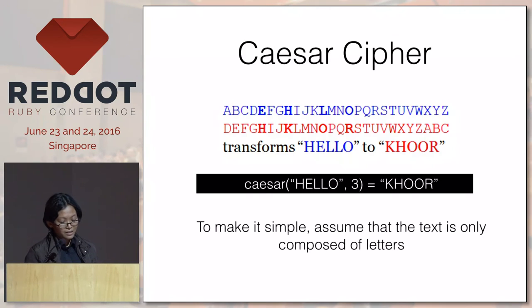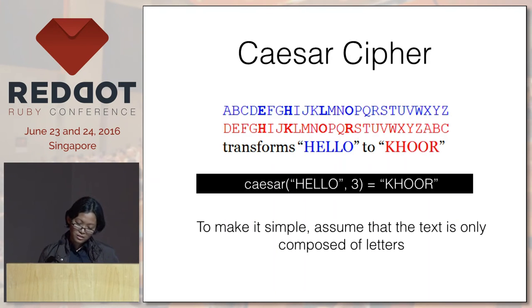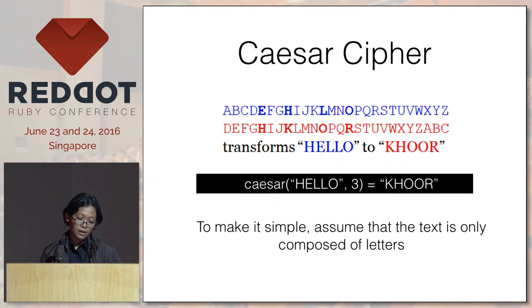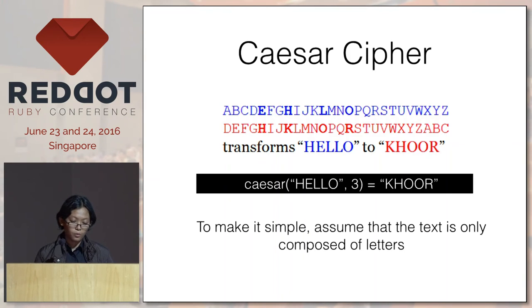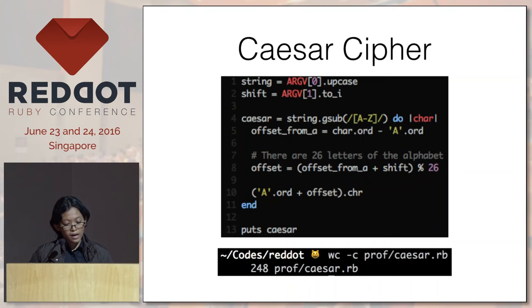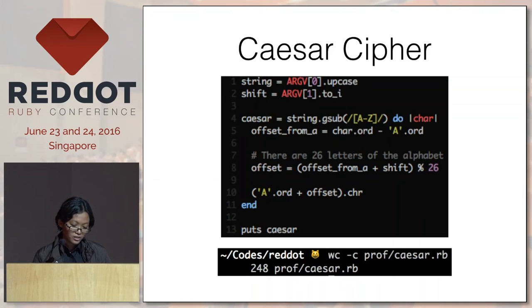Now let's try applying what we learned in Caesar cipher. Anyone familiar with Caesar cipher? I think it's the earliest known substitution cipher in existence. It's like you're shifting the alphabet by a certain amount and then mapping the letters. Here it's shifted by 3, and 'hello' transforms into 'khoor'. To make it simple, let's just assume that the text is only composed of letters, uppercase or lowercase. This is the solution I came up with for the Caesar cipher. I did a character count and it has 248 characters. My goal is to reduce it by 75% to around 60. Let's see if we can do it.